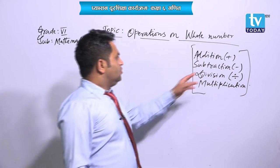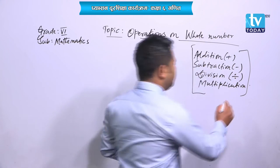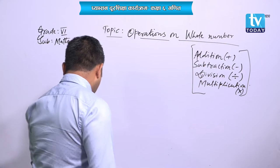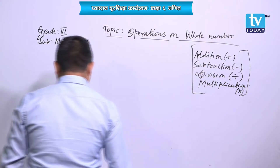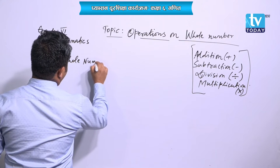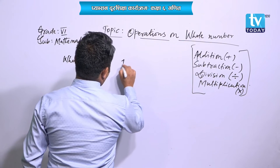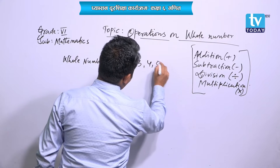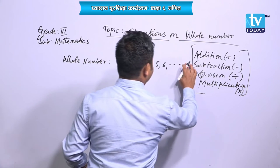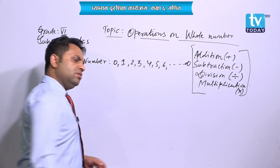We have to use all these signs — addition, subtraction, division, and multiplication — in the proper way. These are the mathematical operations. Whole number means counting number including 0, like 1, 2, 3, 4, 5, 6 — all these up to infinity. Counting number including 0 means whole number.